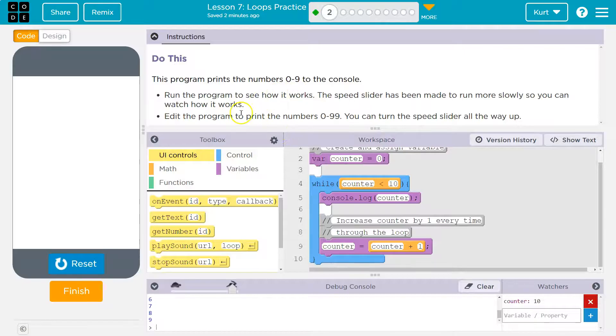Boom. All right. Edit the program to print the numbers zero to 99. You can turn the speed up. Yeah, I would do so. Okay, if you wanted to print zero to 99 with it at 10, what's it go to?